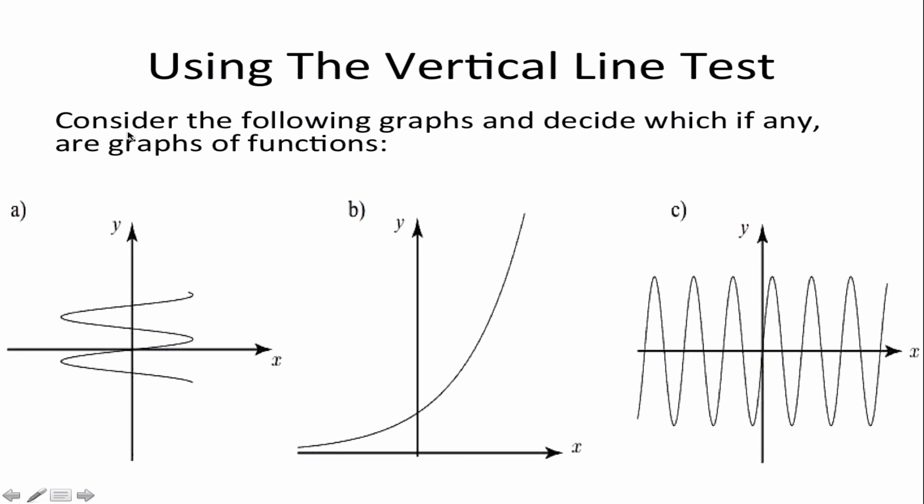So consider the following graphs and decide which if any are graphs of a function. Based on the definition, if we simply draw a vertical line straight down this relation, you can see where the line intersects. For this first example I'm intersecting my relation at multiple points. Therefore this relation is not considered a function.